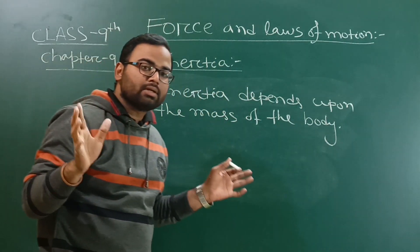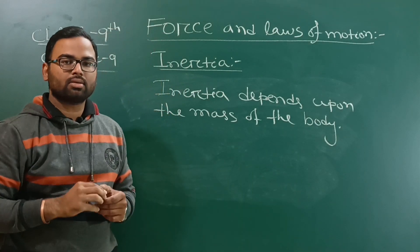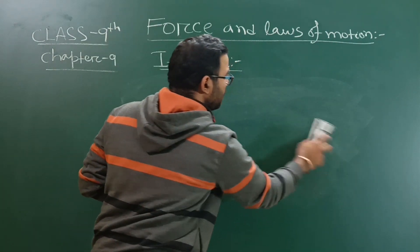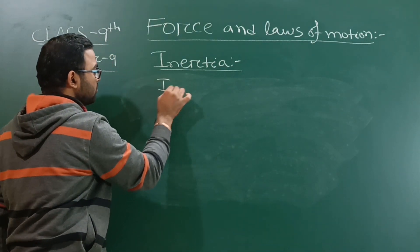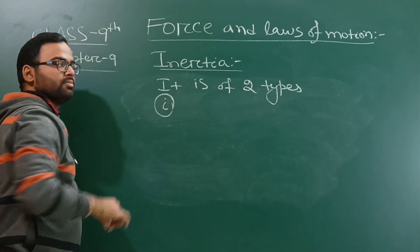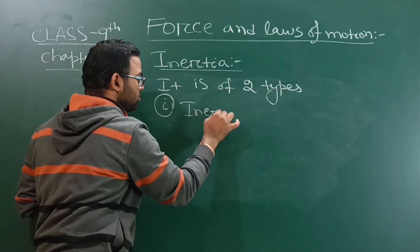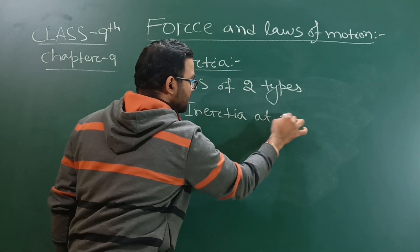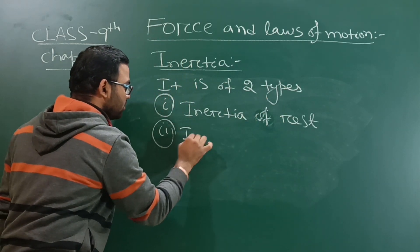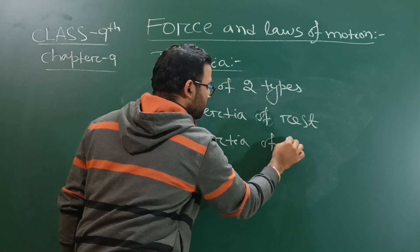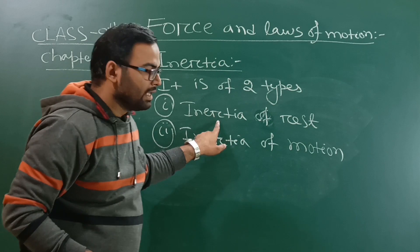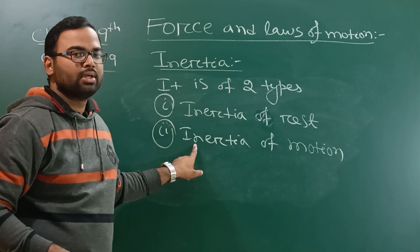If a body has greater mass, that means inertia is greater. So, what are the types of inertia? Inertia is of 2 types: the first one is inertia of rest, and the second one is inertia of motion.